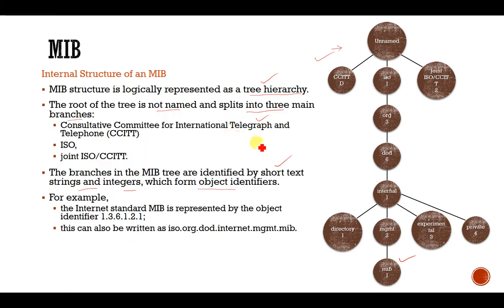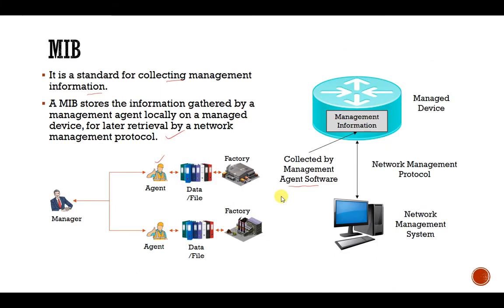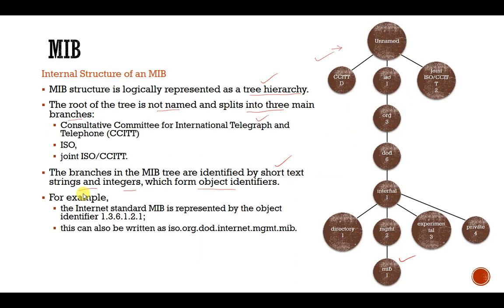Whenever the manager asks about a particular object, he has to tell the agent. If the manager wants to refer to a particular data from the data file, he has to mention the field — he has to mention the file name from where the data is needed. Then the agent goes to that file specifically, collects the data, and transports it to the manager. This is actually the directory structure, or we can say object structure, from where the manager can access data.